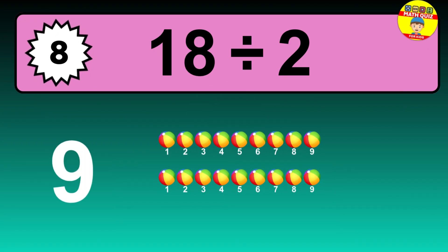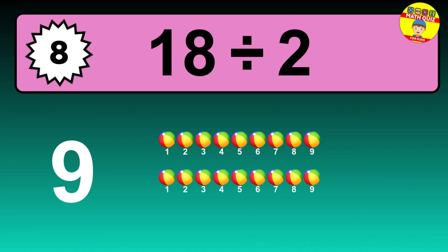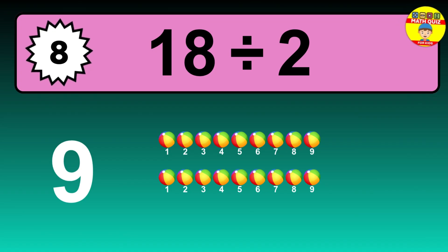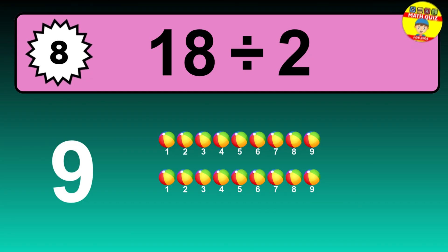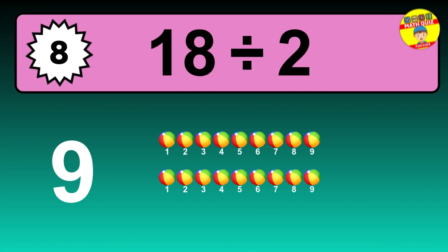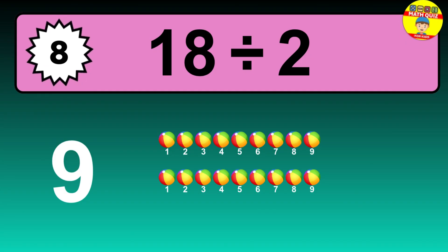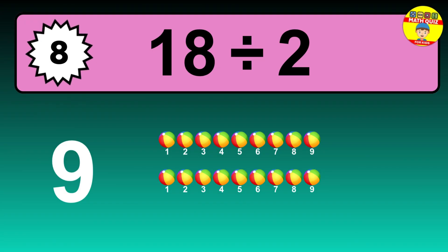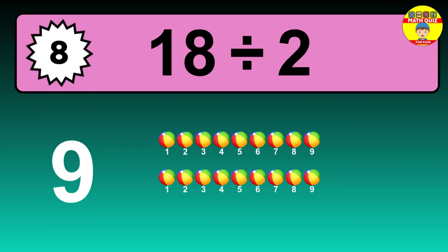Let's go to the solution. Divide the number 18 by 2. Each group contains 2 units, so dividing 18 by 2 results in 9 equal groups. Thus, the result is 18 divided by 2 equals 9.